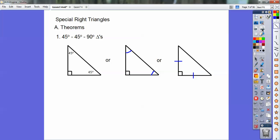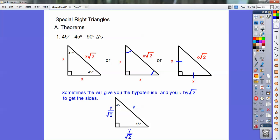All those triangles are the same. They have two equal sides, and then whatever the hypotenuse is, it's always root 2 times the sides. So sometimes they'll give you the hypotenuse. Instead of multiplying by root 2, you have to divide by root 2, so it would be y over root 2.